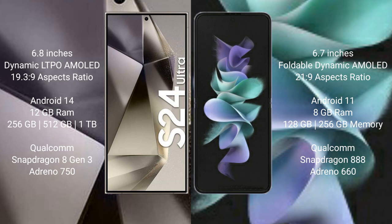The Samsung Galaxy S24 Ultra comes with 12GB RAM and 256GB, 512GB, or 1TB internal storage, a Qualcomm Snapdragon 8 Gen 3 processor, and Adreno 750 GPU.